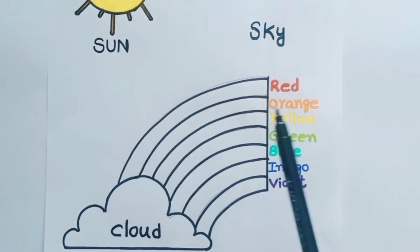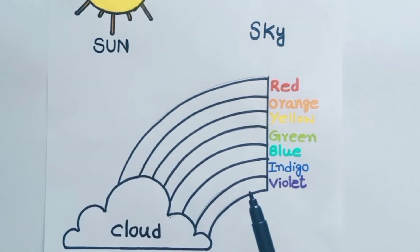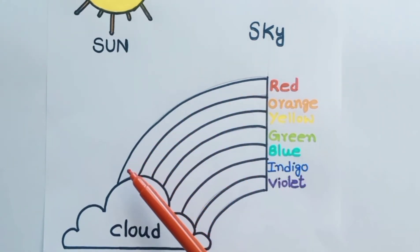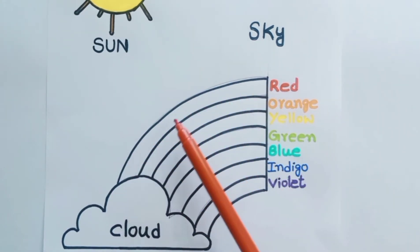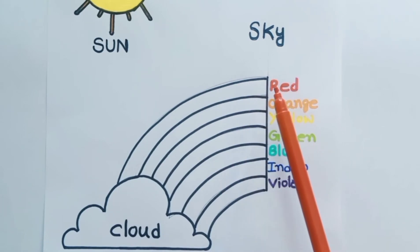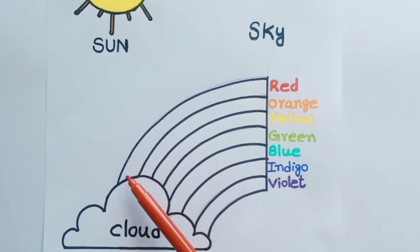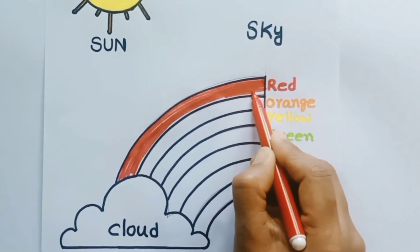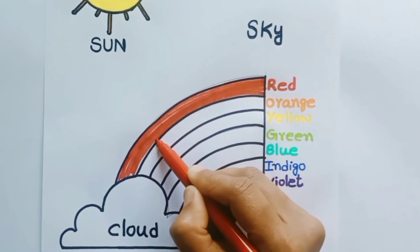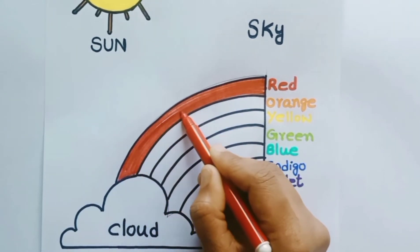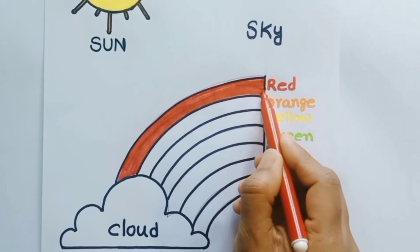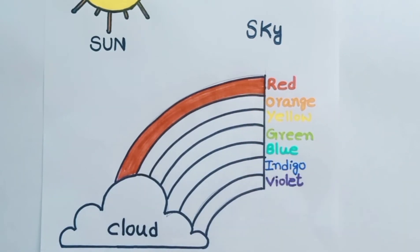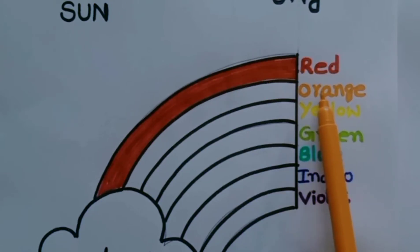Children, shall we start coloring this rainbow? Yes, let us start. This is the outside arc of the rainbow. What is the color of the outside arc? It is red. Shall we color this arc in red? Yes, let us color. The first arc of the rainbow is colored in red.